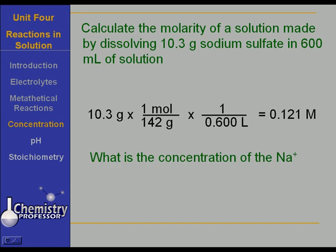What's the concentration of the sodium ion in here? That's a good question. The concentration of the sodium ion is 2 times 0.121 molar, which is 0.242 molar, because sodium sulfate dissociates to give us two sodium ions and one sulfate ion.